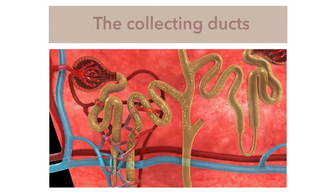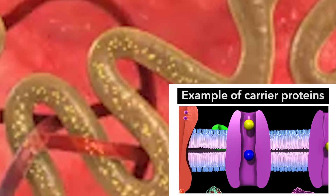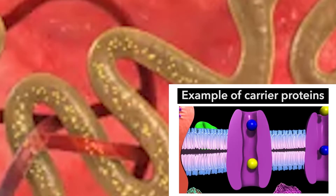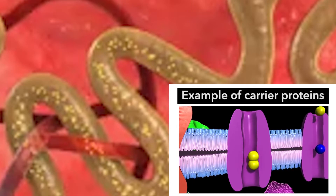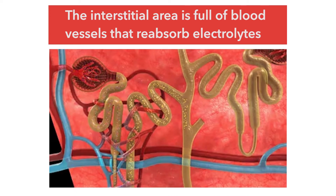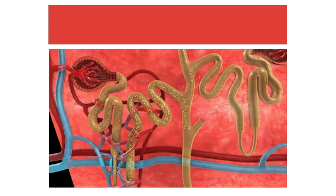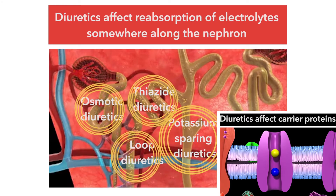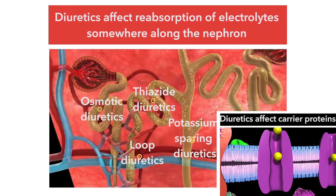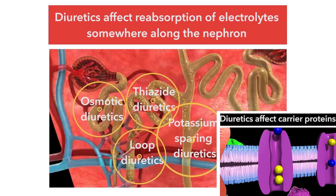In any one of those areas of the nephron, if the carrier proteins embedded in the cell surface of the nephron allow a substance to go from the lumen of the nephron to the interstitial space, it's very possible that substance will get reabsorbed into the blood via capillaries in the interstitial space. With the exception of the osmotic diuretics, which are pharmacologically inert, all diuretics exert their effects either directly or indirectly on one or more of those carrier proteins and therefore affect the reabsorption of some of the electrolytes.